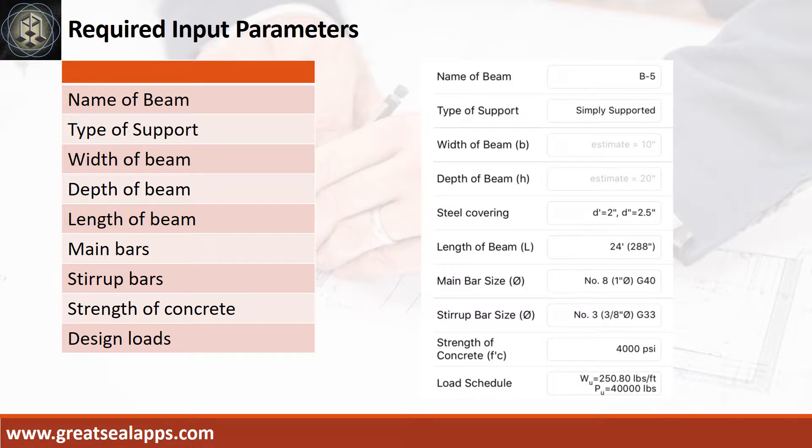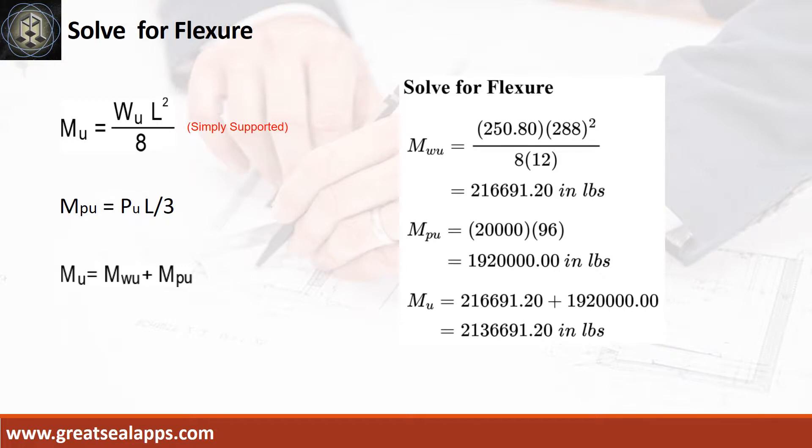Main bars: 1 inch diameter at grade 40. Stirrup bars: 3/8 inch diameter at grade 33. Strength of concrete 4,000 psi. Factored uniform load is 250.8 pounds per foot and total factored concentrated load is 40,000 pounds. Given factored uniform load equals 250.8 pounds per foot, each factored concentrated load equals 20,000 pounds. L equals 24 feet.